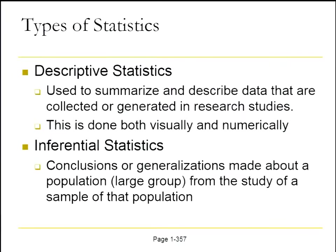We're going to talk about two types of statistics: statistics that describe, and statistics that make inferences — that is, descriptive and inferential statistics. Descriptive statistics are used to summarize and describe data collected or generated in research studies, done either visually or numerically. Inferential statistics are used to make conclusions or generalizations about a group from a sample of that group — or in statistical jargon, about a population from a sample of that population, because we obviously can't study the whole population.